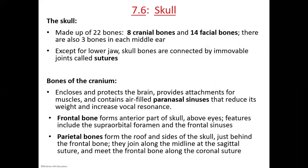The parietal bones form the roof and the sides of the skull, just behind the frontal bone and off to the side — kind of where you would put your hands to your temples. You have two of them: you only have one frontal bone, but you have two parietal bones, a left one and a right one.